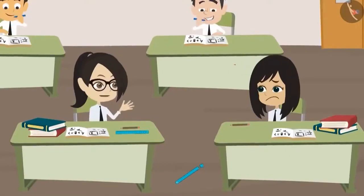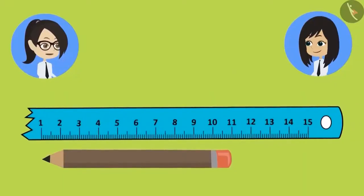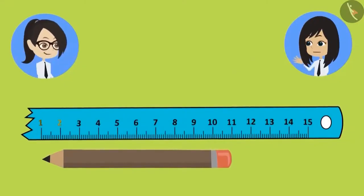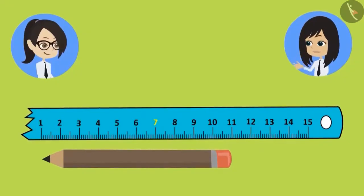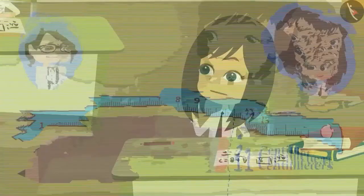Vandana understands: placing the pencil at 2 centimeters incorrectly includes the 0–2 centimeter gap in the measurement. She corrects it by starting at 0, and now her pencil is also 10 centimeters. They then try to measure with a broken scale. After counting from the first visible mark, the pencil appears to be 11 centimeters — but they know it should be 10.